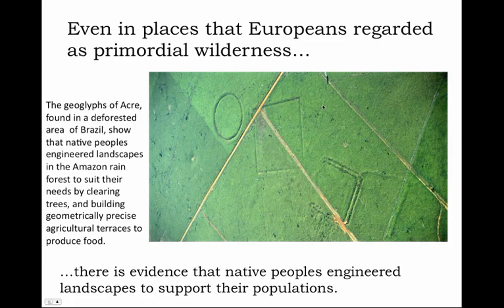Even in places that Europeans regarded as uninhabitable primordial wildernesses, there is evidence that native peoples engineered these landscapes to support their populations. I'm talking about the Amazon basin of Brazil. Here you see a parcel of the Amazon that has been deforested by modern developers — loggers who ripped out trees and undergrowth to reveal what turned out to be native landscapes. The fabulous geoglyphs — designs carved right into rock and earth — present in western Brazil in the region of Acre show that native peoples engineered landscapes even in the Amazon rainforest, building geometrically precise agricultural terraces. Circles, rectangles, and other shapes were actually earthen terraces used for agriculture, not revealed until modern development changed the landscape.